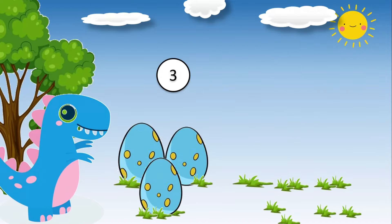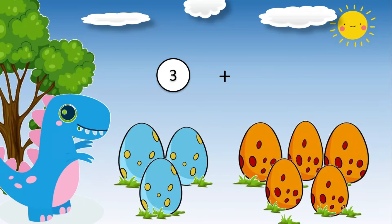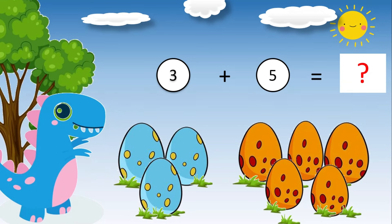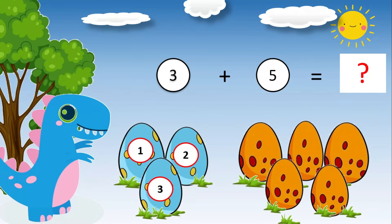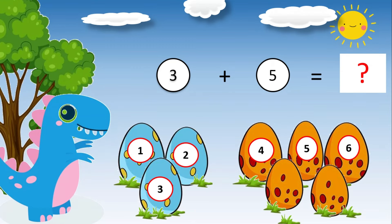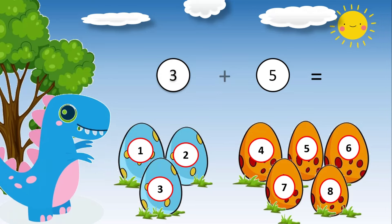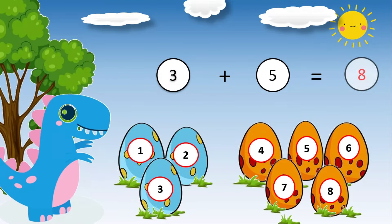Three dinosaur eggs plus five dinosaur eggs is equal to what? Do you want to know the answer? Let's add one, two, three, four, five, six, seven, eight. Three plus five equals eight.